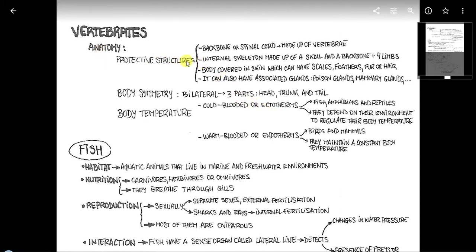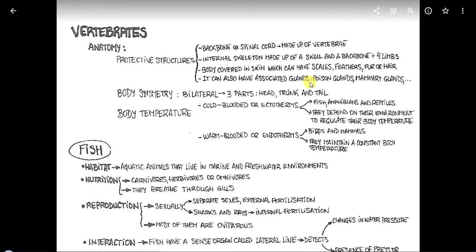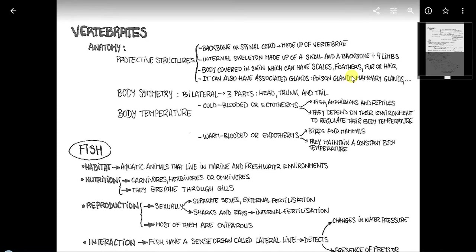Ahora en español. Las estructuras protectoras son muy características de este grupo de vertebrados porque aparece una espina dorsal o columna vertebral que está hecha de vértebras y forma parte del esqueleto interno que tiene un cráneo que protege el cerebro y algunos órganos de los sentidos. El cuerpo puede estar cubierto de piel y puede tener escamas, plumas, pelaje y cabello, según el tipo de animal. Además pueden tener también asociadas glándulas determinadas, glándulas venenosas, glándulas mamarias, glándulas sudoríparas, glándulas sebáceas, etcétera.